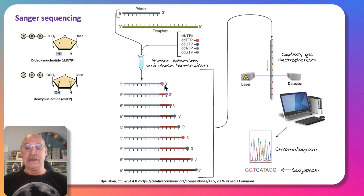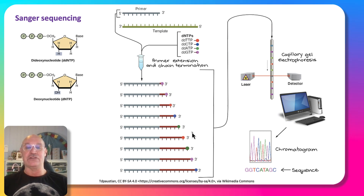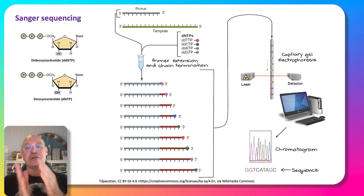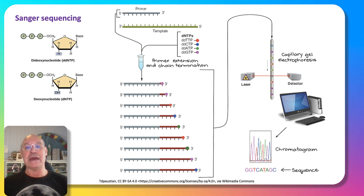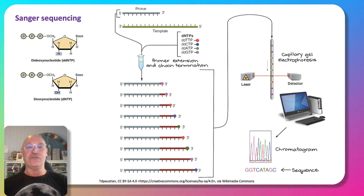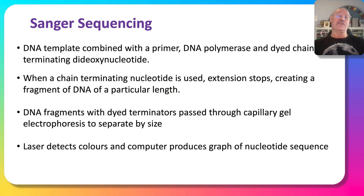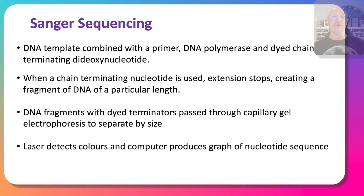Following the coloured peaks you can read off the nucleotide sequence directly. Because the human genome is absolutely massive, Sanger sequencing took 20 years to complete. That process is essentially what was described in the Sanger sequencing summary.